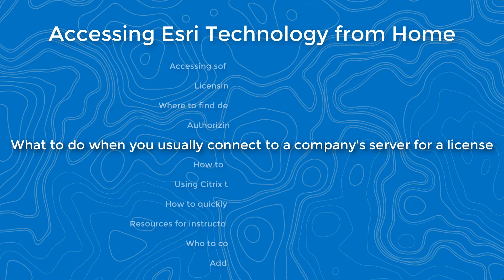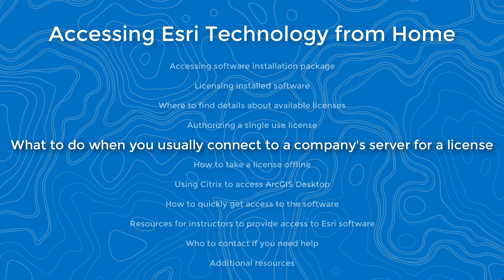I normally connect to a company server to access my license — what do I do now? If you were connecting to a company server to access your license, this means you were using a concurrent use license, which was authorized on a license server on your company network. If you do not have access to this network from your home office, for example via a remote desktop connection or VPN, then you will no longer be able to use this license.